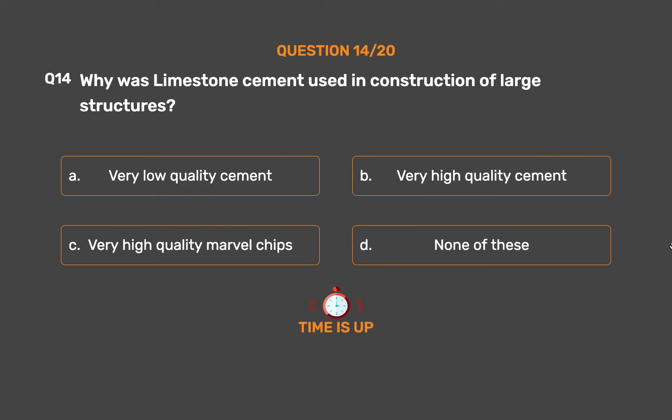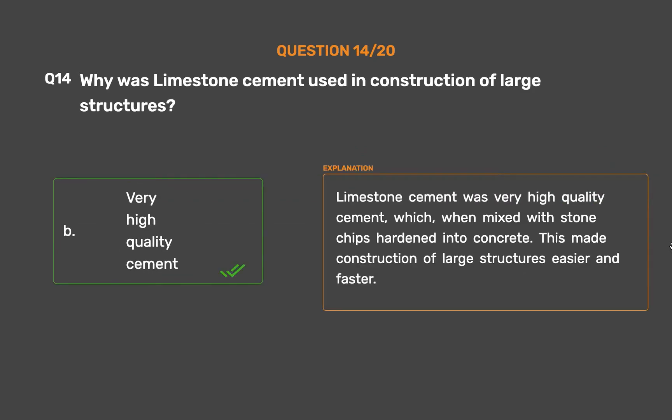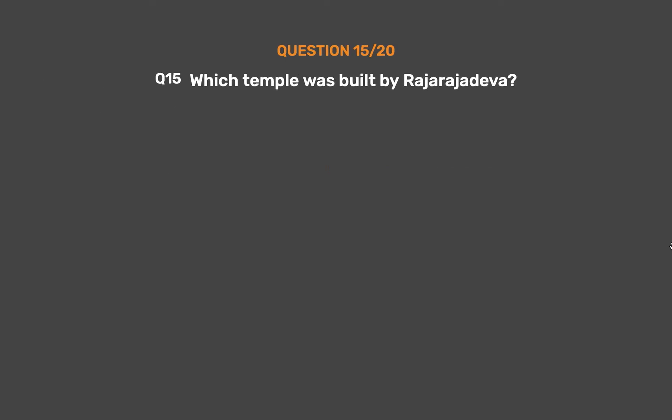The correct answer is Option B: Very high quality cement. Limestone cement was very high quality cement which, when mixed with stone chips, hardened into concrete. This made construction of large structures easier and faster.